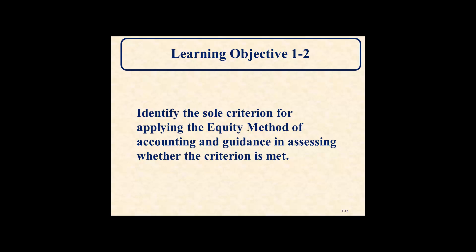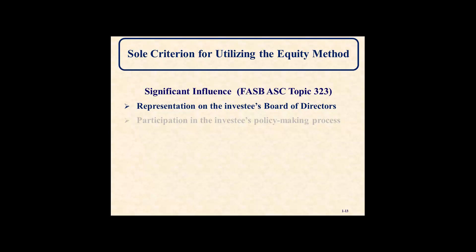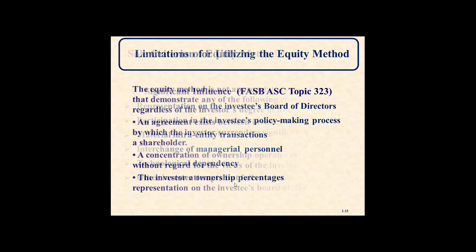According to FASB ASC Topic 323, the criteria for assessing whether significant influence exists include: representation on the investee's board of directors, participation in the investee's policy-making process, material intra-entity transactions, interchange of managerial personnel, technology dependency, or other investee ownership percentages.